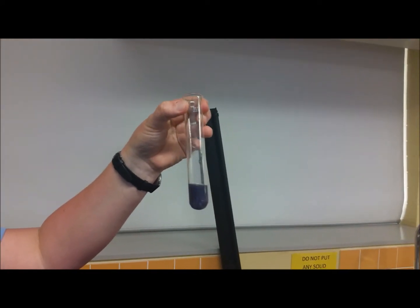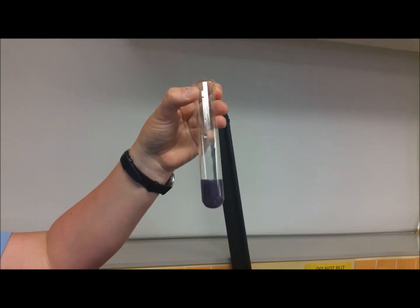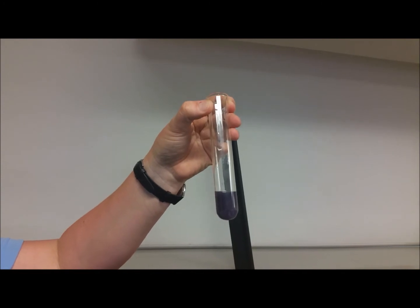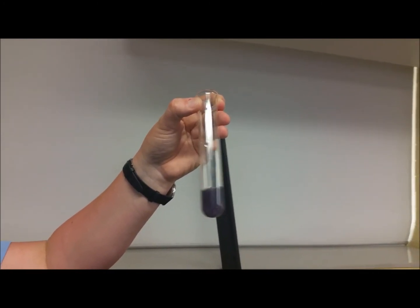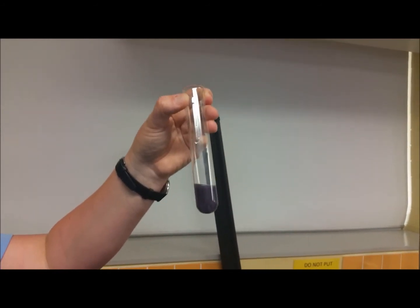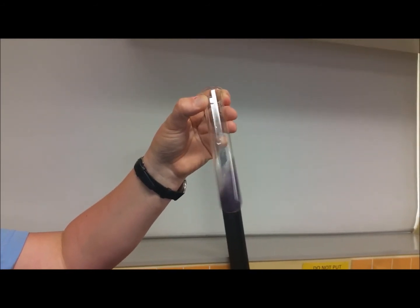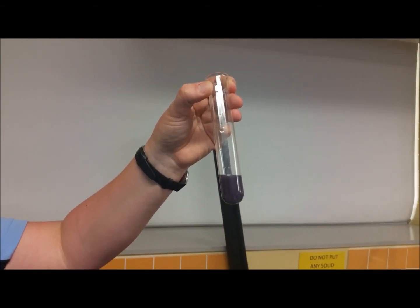We describe the color for a positive test result for starch as being usually like a purple black or a blue black. And I'll bring it around to show you as well. But if starch is present in the foods that you test, when you place iodine onto it, you will see that blue black color appear that tells you that starch is actually in it.